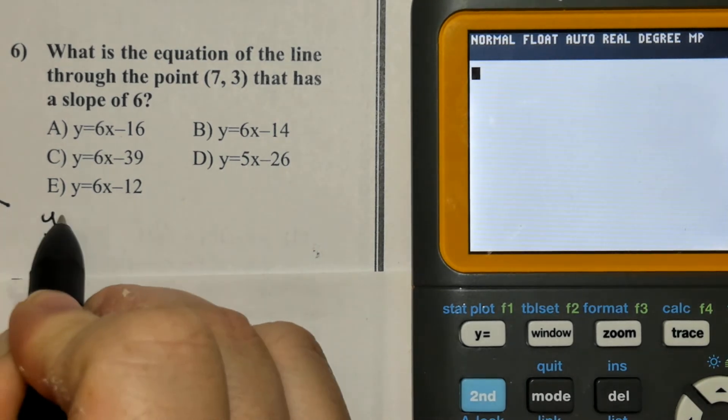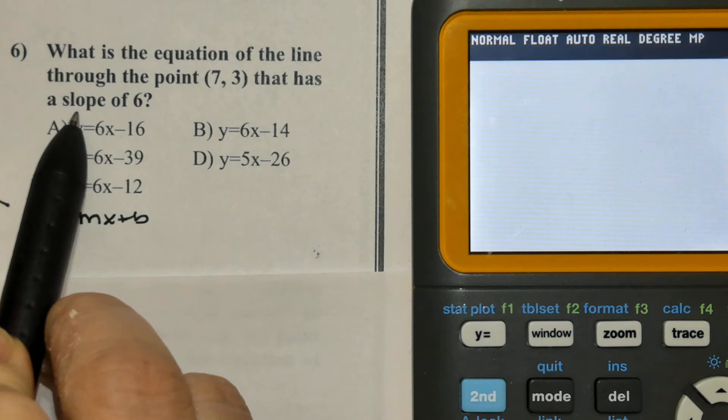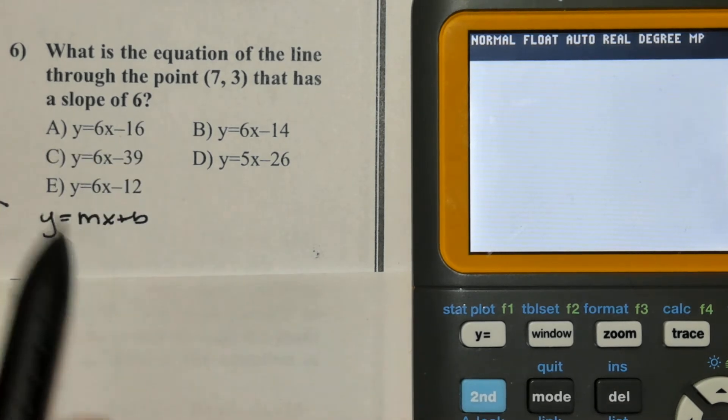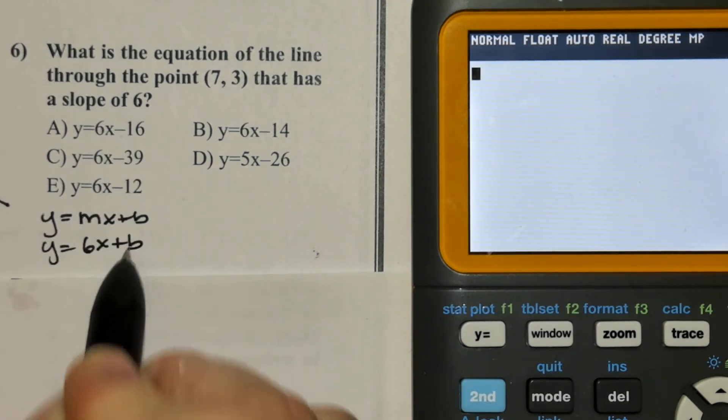So I start like number 5 with y equals mx plus b. Your slope is going to replace the m, so y equals 6x plus b.